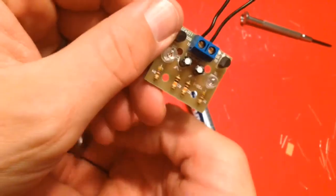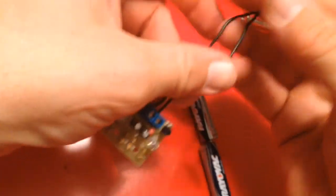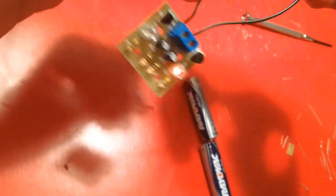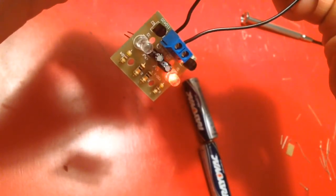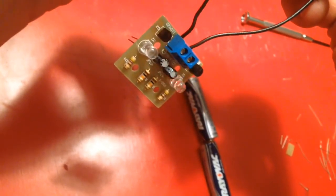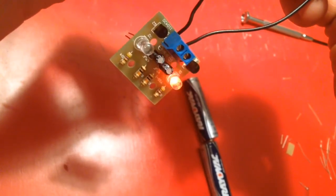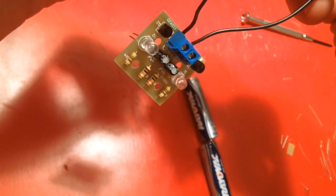I went ahead and put the other LED in the circuit, thinking that might help. And when I put the battery on, now the working LED is blinking. So apparently the fact that the circuit wasn't complete was causing the problem with the blinking aspect of it. So now it's working.